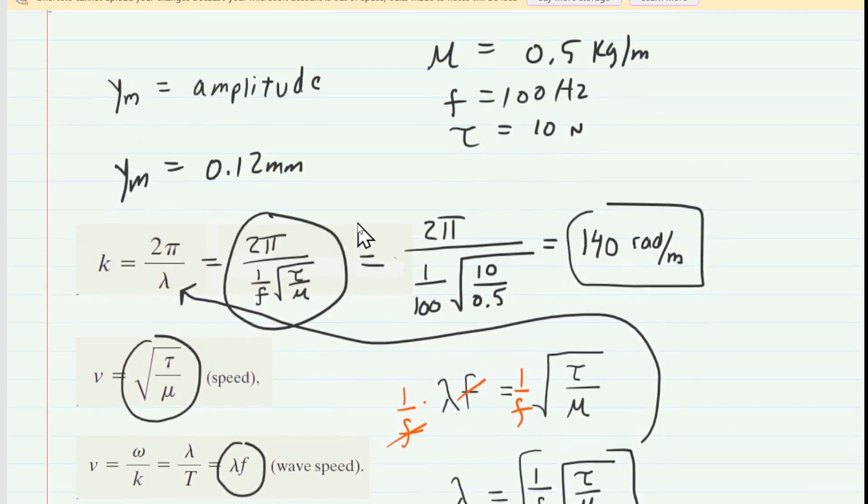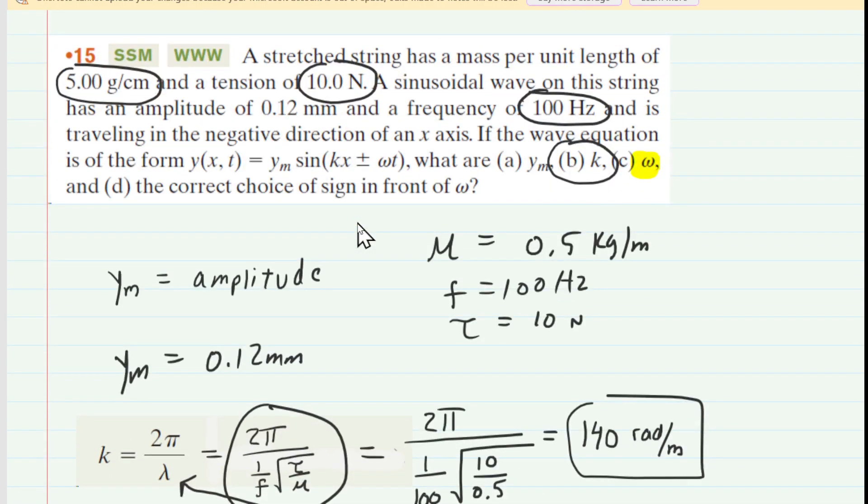Let's look at part D to cap off this question. It says, what is the correct choice of sign in front of ω? And we'll notice that the given equation in the parentheses here for the argument of sine has a plus or a minus. And the reason for the plus or minus is because it depends on which direction the wave is traveling.